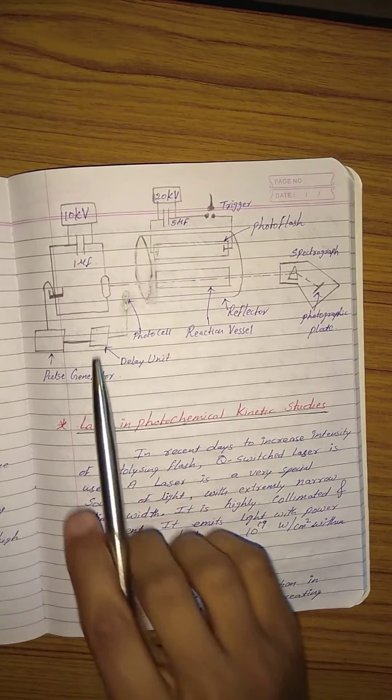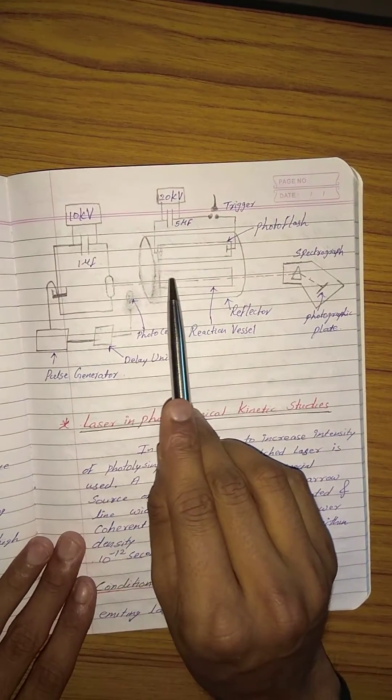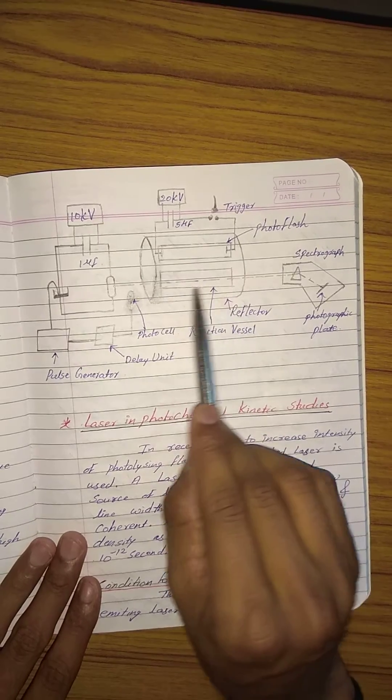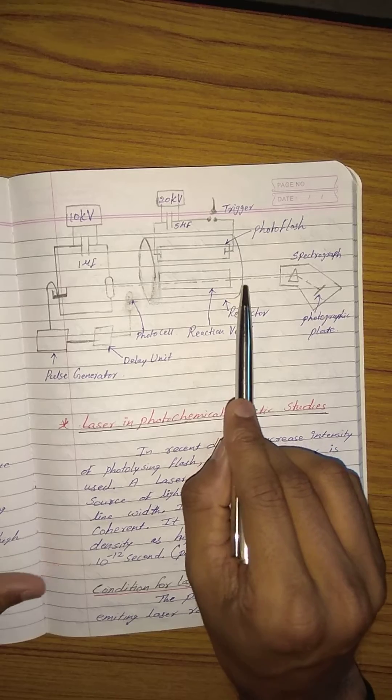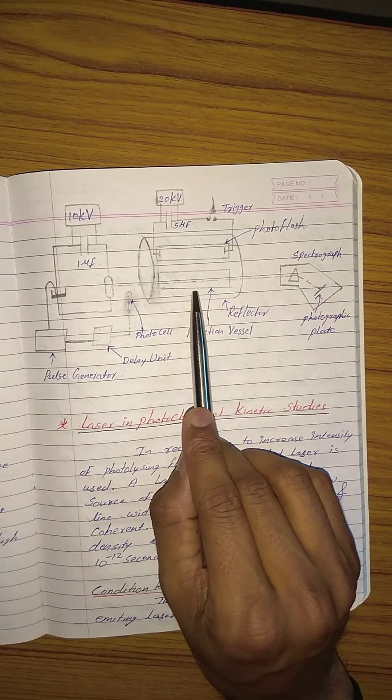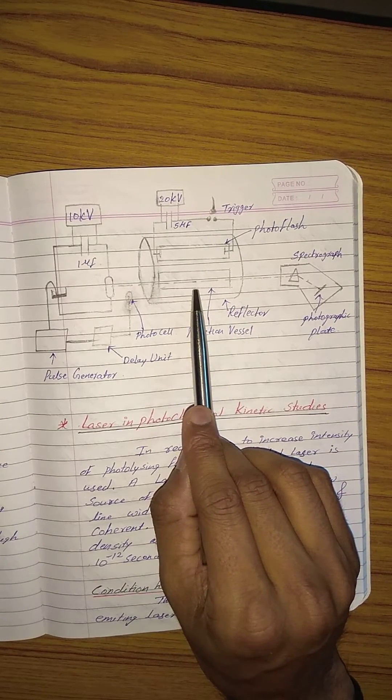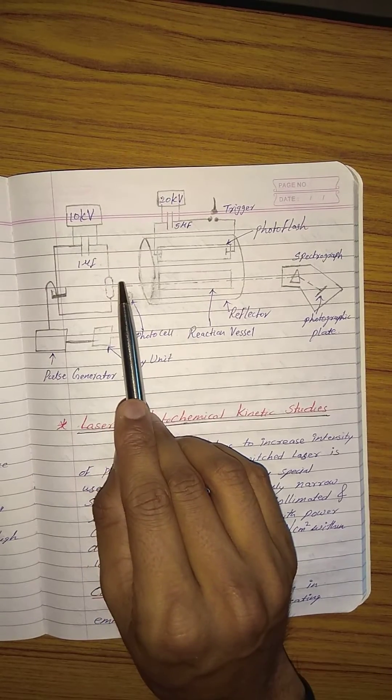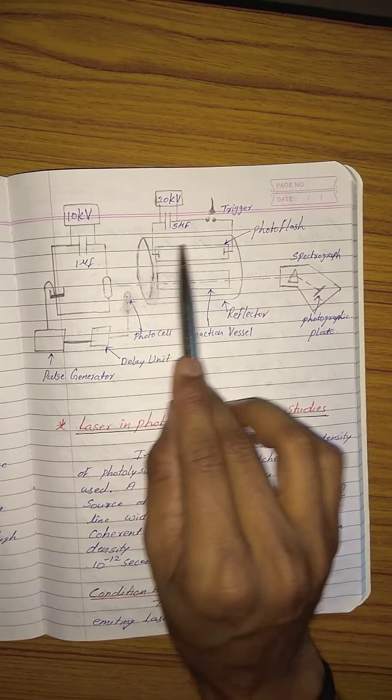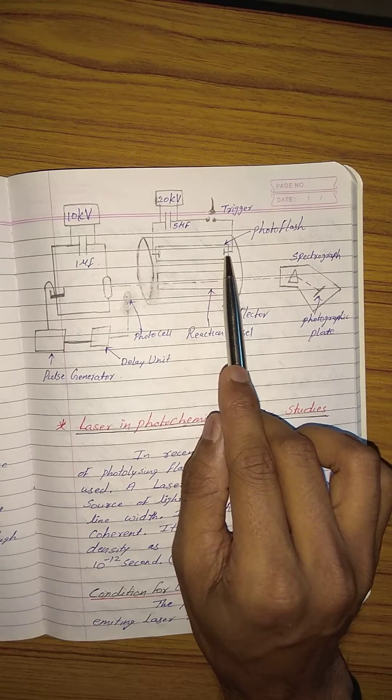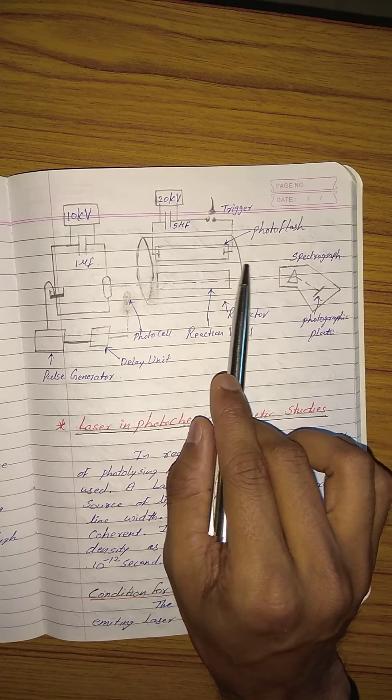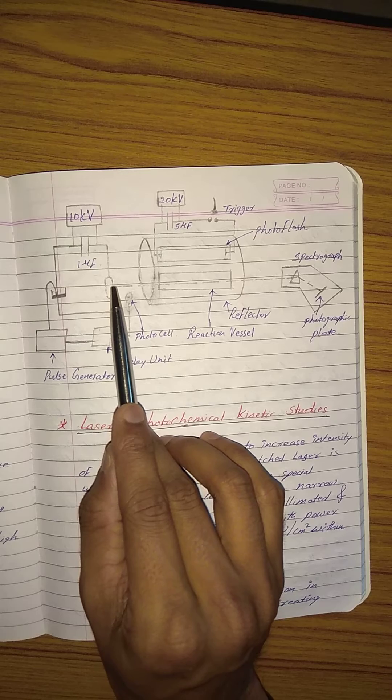This particular reaction system, also called a cell, is where the reactions are taking place. It is subjected to high intensity flash. This flash is generated from this particular tube, and the reaction is monitored using single beam absorption spectroscopy.